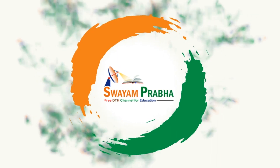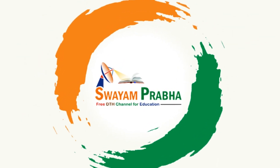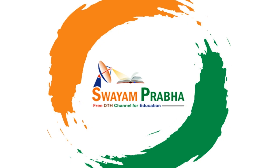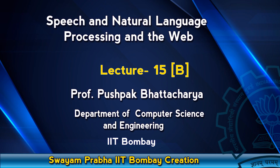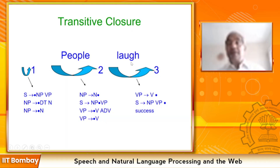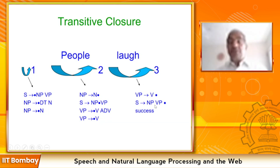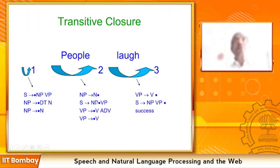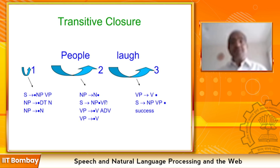Laugh gives the provision to resolve V between positions 2 and 3, and resolve VP as well. The dot moves over VP in the rule S goes to NP VP, and the dot has gone over the whole rule to the end — this is a success of parsing. This solves, to an extent, both the demerits of top-down and bottom-up parsing. This is look-ahead parsing, LA-LR parsing.